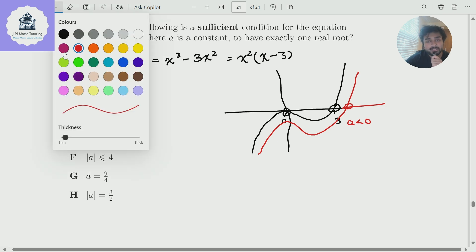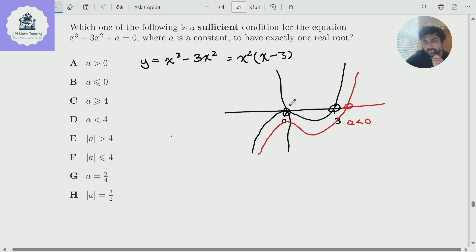Or on the flip side, if I use a different color here, if I was to bring this original black cubic up by enough, so that this turning point here went above the x-axis, my new graph would look something like that. And again, I'd only have one real solution. So I just need a to be sufficiently positive to make this graph move up. And the question is, how much does it need to go up by?